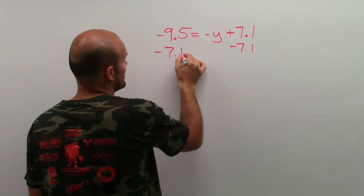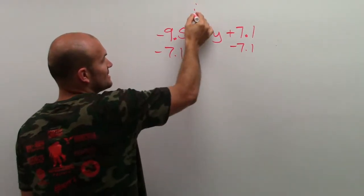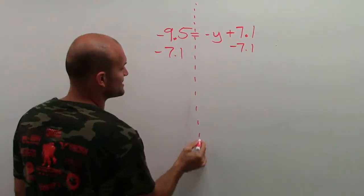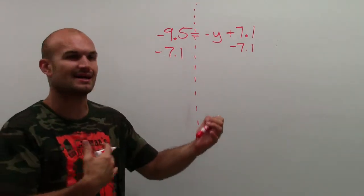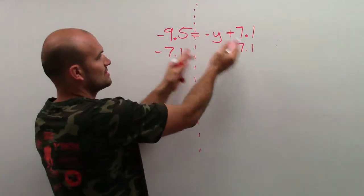and I need to make sure I subtract 7.1 on both sides of the equal sign. To represent both sides of the equal sign, I'm just going to draw a dotted line, just so you kind of know when I say both sides, I mean both sides of the equal sign, all right?